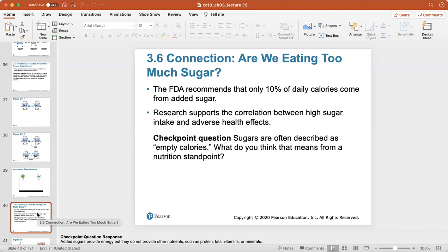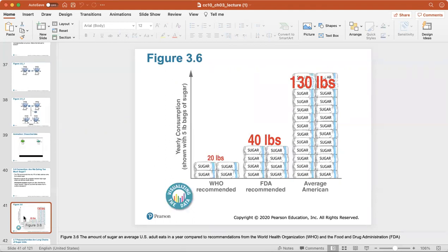Are we eating too much sugar? The FDA recommends that only 10% of daily calories come from added sugar, but research supports the correlation between high sugar intake and adverse health effects. Sugars often are described as empty calories. What does that mean from a nutrition standpoint? Added sugars provide energy, but they don't provide any other nutrients like protein, fats, vitamins, or minerals. Here's a look at the amount of sugar the average U.S. adult eats in a year compared to recommendations. The average American eats about 130 pounds of sugar in a year. Watch your sugar intake.